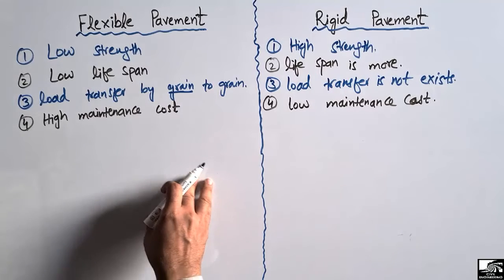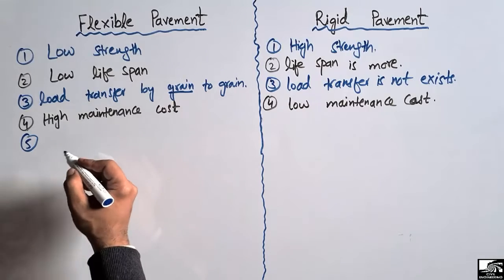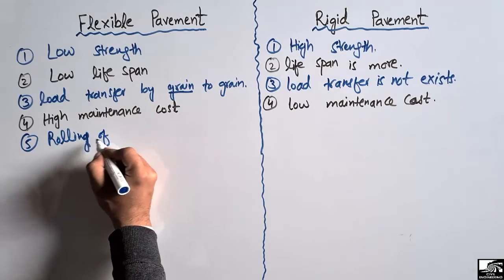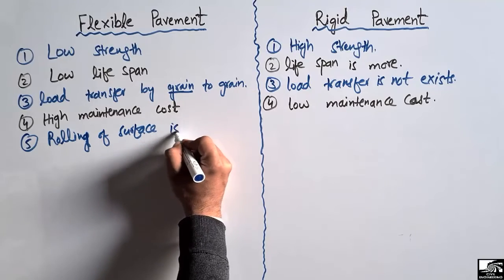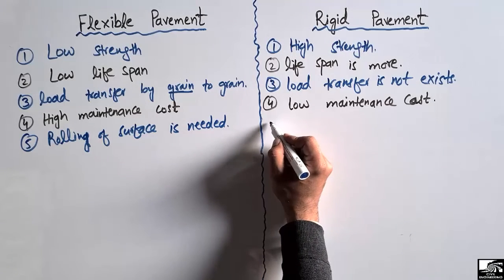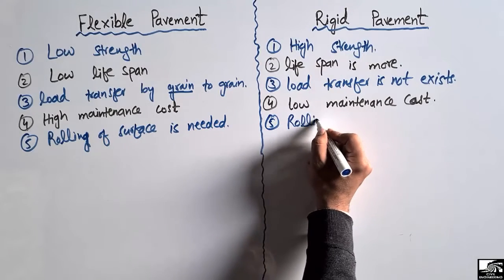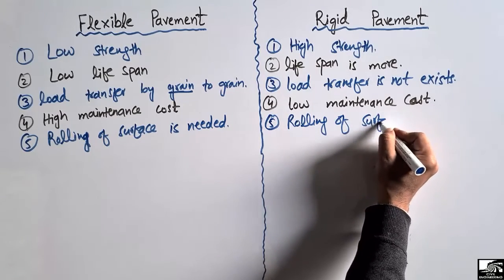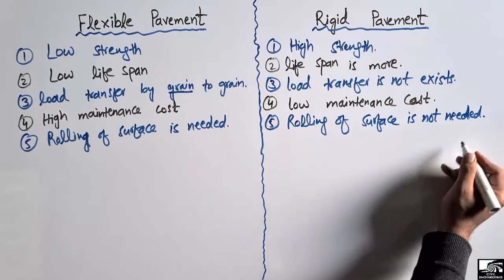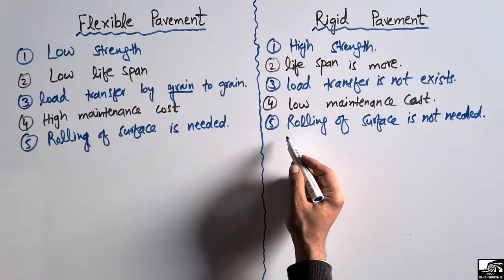The fifth difference is the rolling of their surfaces. In case of flexible pavement, rolling of the surface is needed. While in case of rigid pavement, since it is made of concrete, rolling of the surface is not needed, because concrete is a rigid material and does not require rolling.